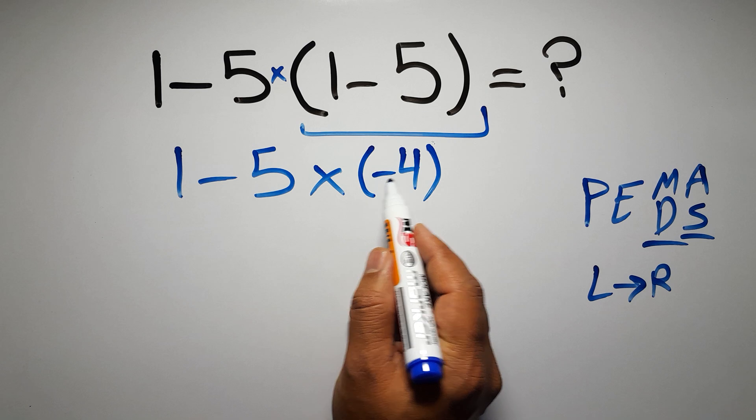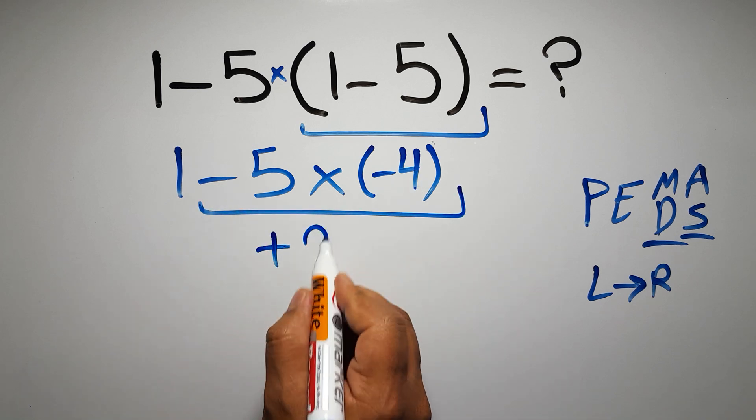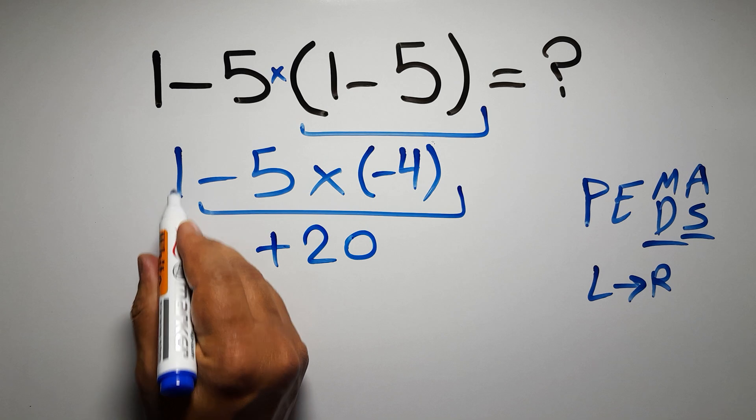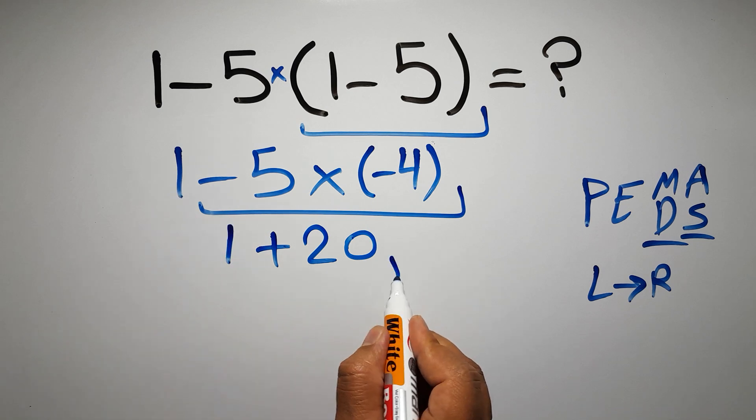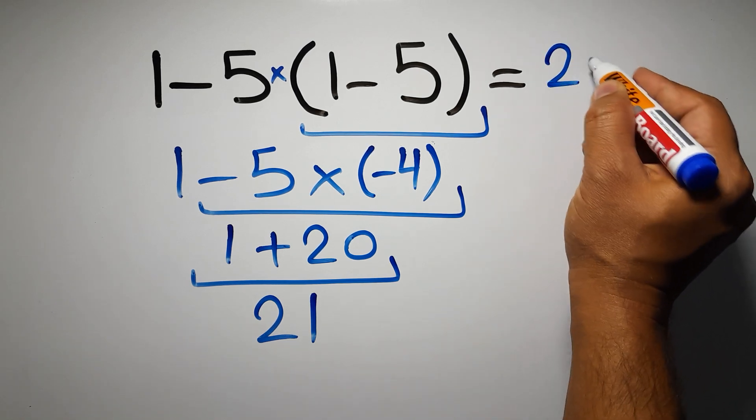Negative 5 times negative 4 gives us positive 20. So we have 1 plus 20, which equals 21. And this is our final answer to this problem. The correct answer is 21.